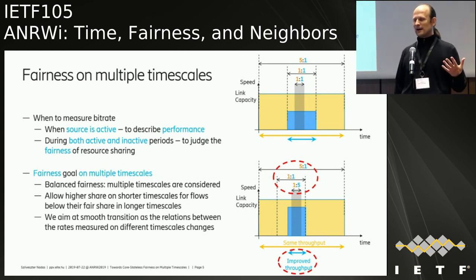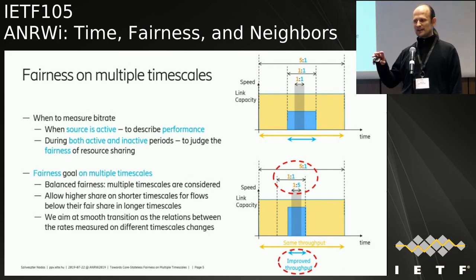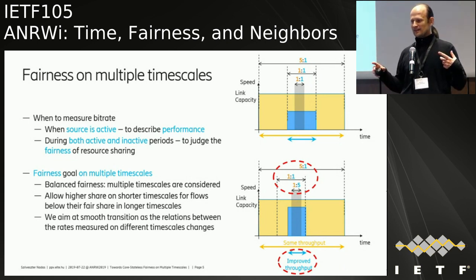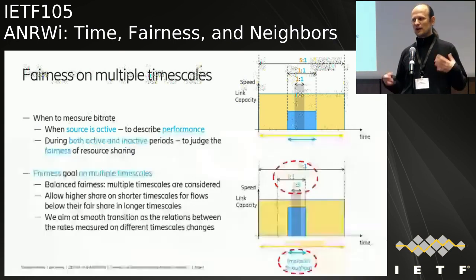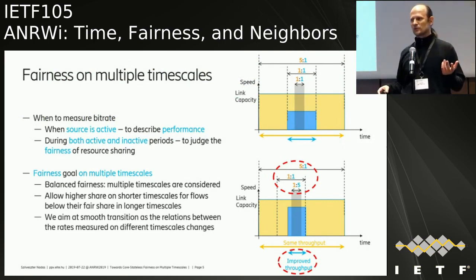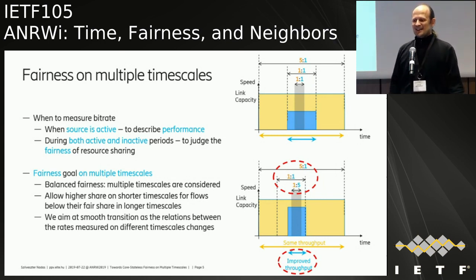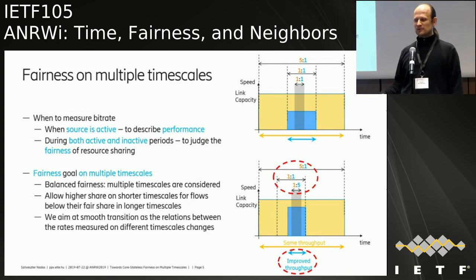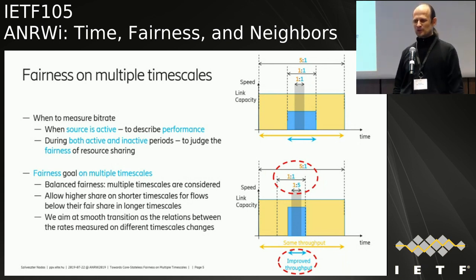For example, if we have the same fairness on each timescale — one-to-one sharing — the blue flow takes quite a long time to download. But if on a longer timescale the blue flow had no transmission, we can allow a higher share on the shortest timescale, such as one-to-five, while on the longer timescale resource sharing remains one-to-one. Assuming the yellow user is downloading alone, their download time won't change while the blue user's throughput improves significantly. We also aim for smooth transitions so there are no sudden rate changes.